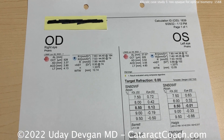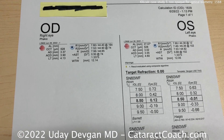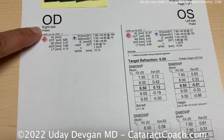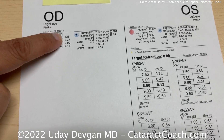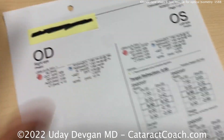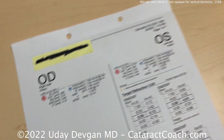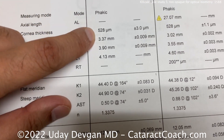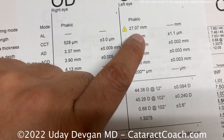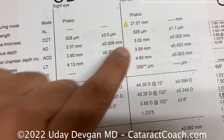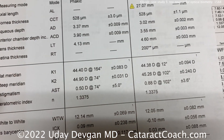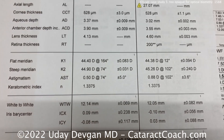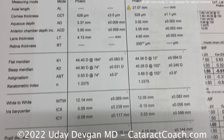Let's look at another patient with a very, very dense cataract — an absolutely white brunescent cataract in the right eye — and unable to get an axial length measurement. Looking at the biometry printout, the machine is unable to read the axial length in the right eye. The left eye is able to get it, but it's not the best data. Everything else looks reasonable. Can't measure retina thickness, barely able to get some lens thickness.